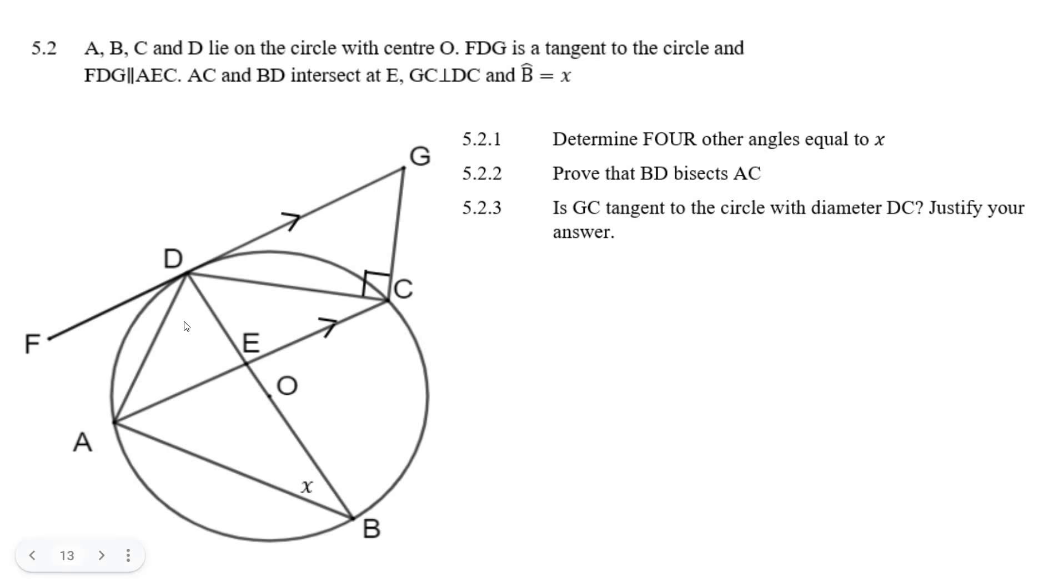But we better get straight here that A, B, and D, and C lie on the outside of the circle. They tell us that F, D, G and A, E, G are parallel.